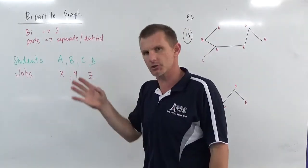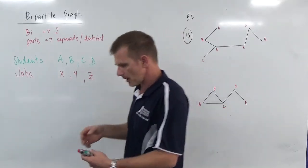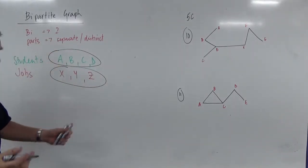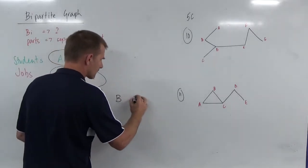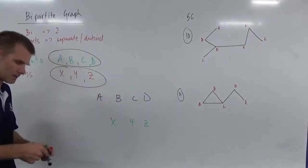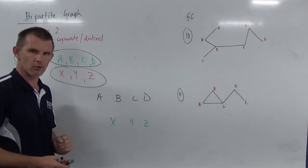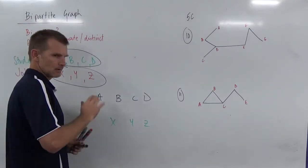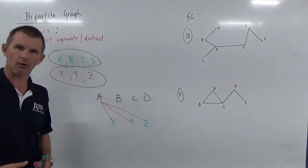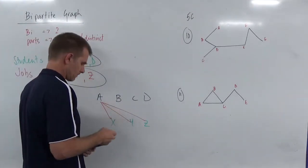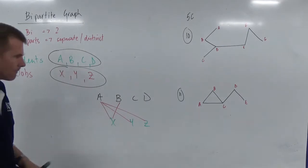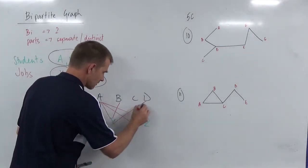So maybe job Y doesn't suit some people, and maybe job Z the same way. A bipartite graph is going to look like this — two distinct sets of things. Put the first ones across the top and the other ones across the bottom. It doesn't mean one person can only do one job. Person A is tall, smart, they can do everything, so person A may be linked to every job. Person B can only do job X. Person C can't do any of them — that's okay. Person D can do job X and job Z.